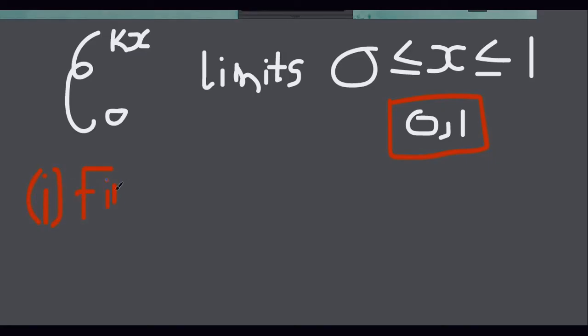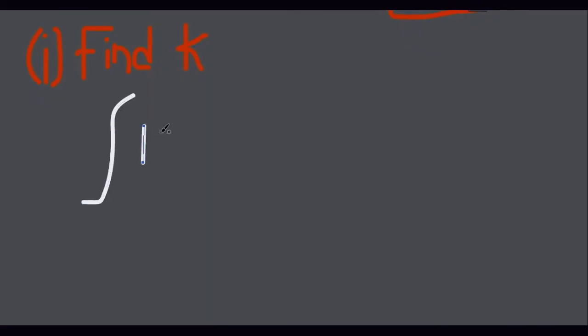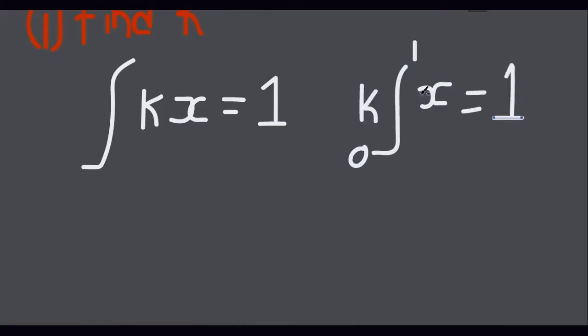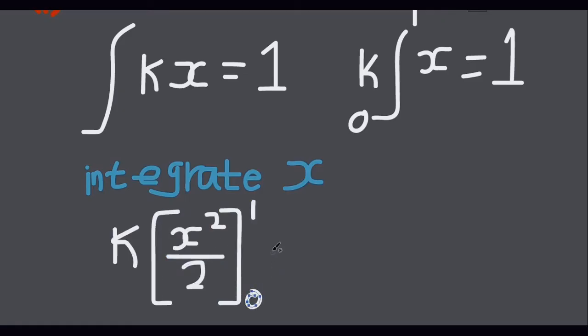So finding k we will integrate the value of k and multiply it with x and equate it to 1. Not forgetting our limits 1 and 0. Integrating for x, we will get x squared over 2 and there are limits which is 1 and 0.